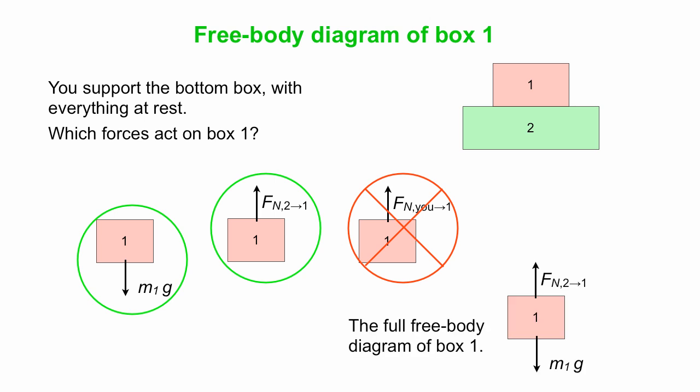So put those together into the full free body diagram, box one. And we'll just step back and think about that. Have we accounted for all the interactions? Yes, it's interacting with the Earth. We got that. It's interacting with box two. We got that. It's not interacting with anything else. Secondly, what's the box doing? It's staying at rest. If forces should balance, that's what our picture shows, balanced forces.